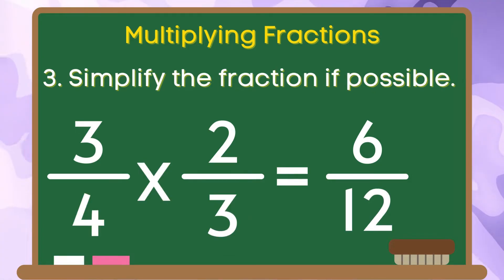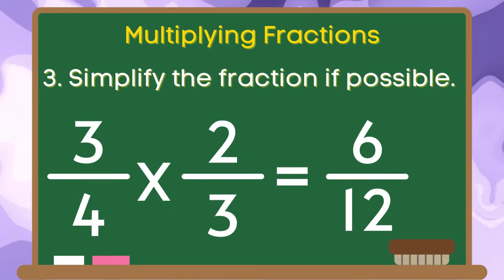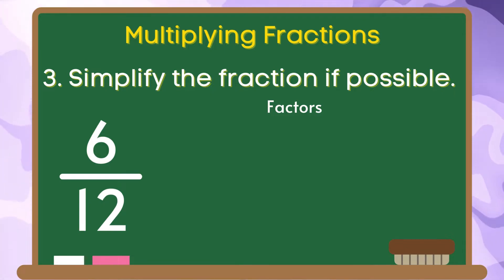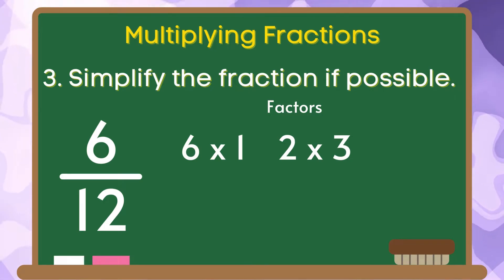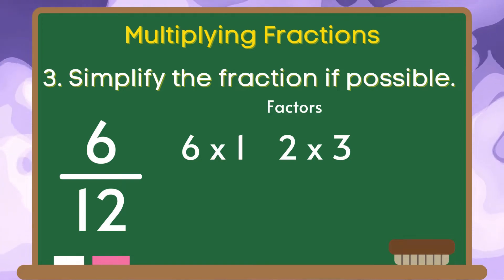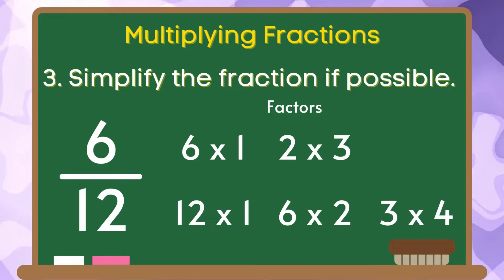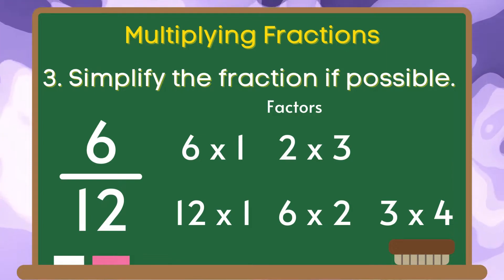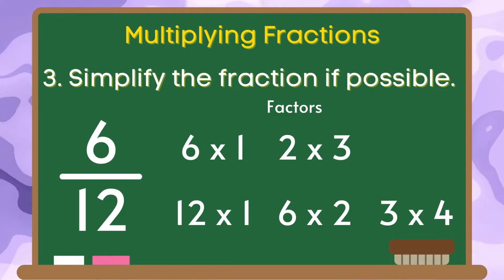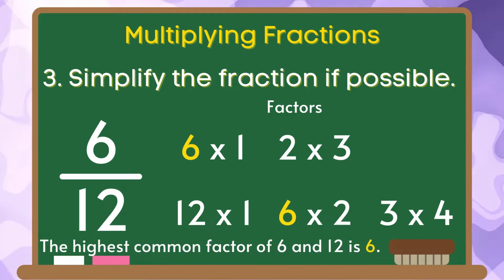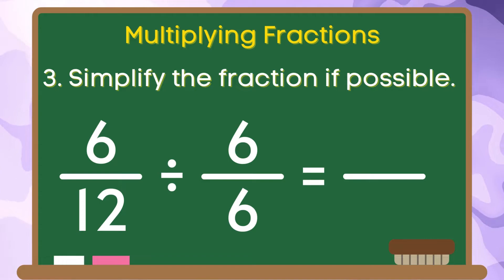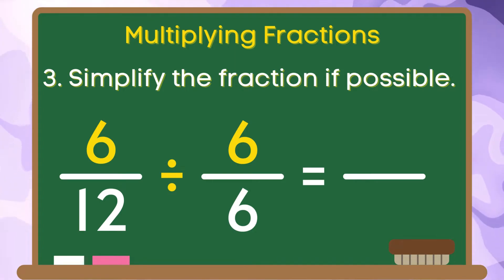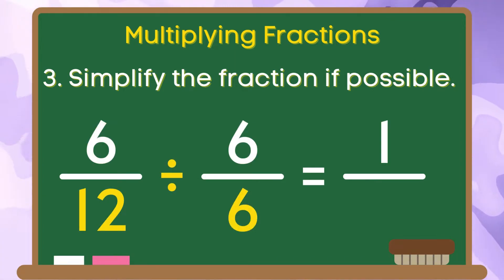And for the last step, let us simplify the fraction if possible. Let us get the factors of 6 and 12. The factors of 6 are 1, 2, 3, and 6. For 12, we have 1, 2, 3, 4, 6, and 12. The highest common factor of 6 and 12 is 6. To simplify our fraction, we are going to divide 6 by 6 and the answer is 1. 12 divided by 6 is equal to 2.